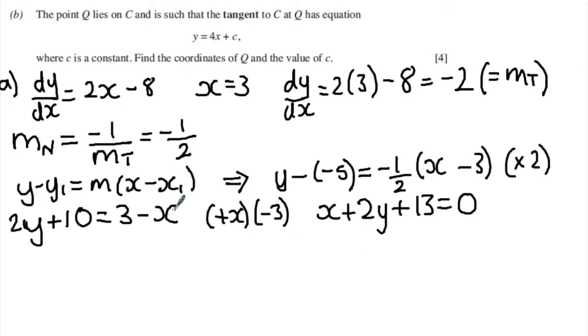Now, marks on this question. We get initially a method mark for trying to attempt the differentiation. We then get an additional method mark here if I show that I'm going to substitute in x equals 3 into the gradient that you've got. We get an accuracy mark or answer mark for dy by dx, the gradient at the point being minus 2.